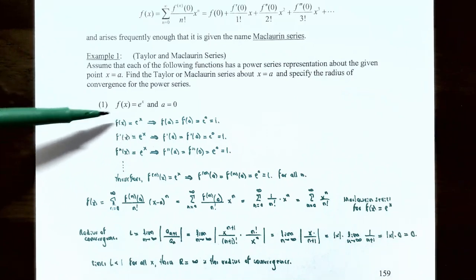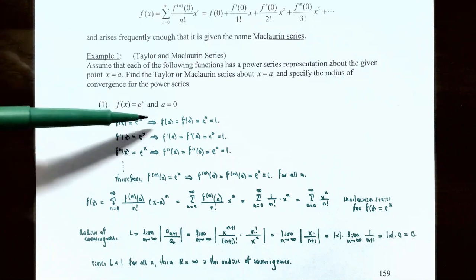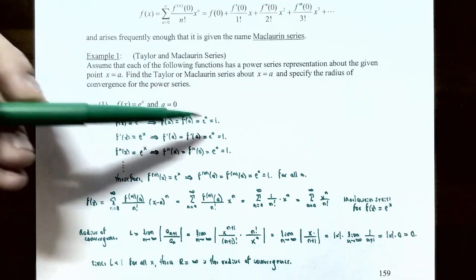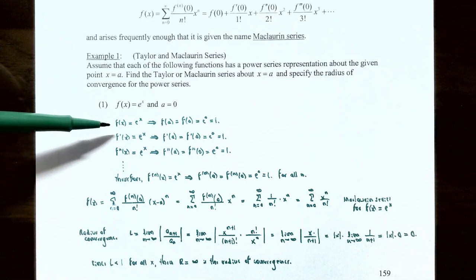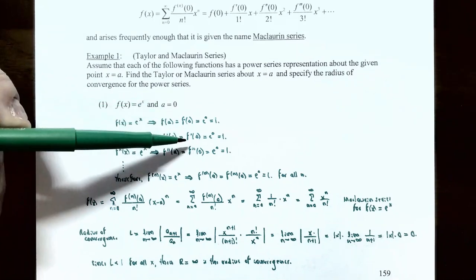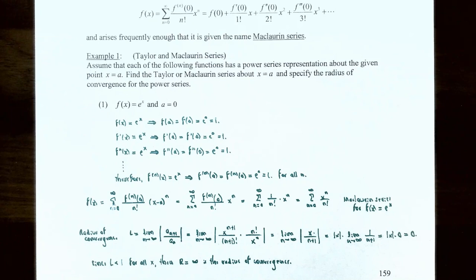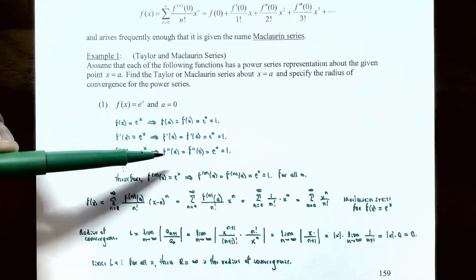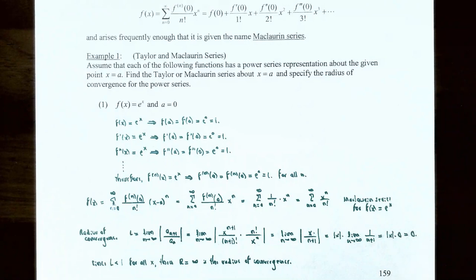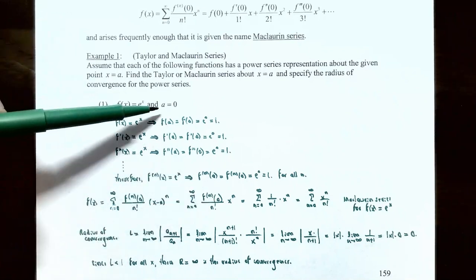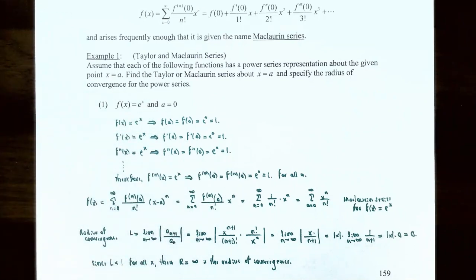We need the pattern for the coefficients c_n, which involve derivatives evaluated at a=0. The original function f(x) = e^x evaluated at 0 gives f(0) = e^0 = 1. The first derivative is e^x; evaluated at 0, f'(0) = 1. The second derivative is also e^x; f''(0) = 1. So all derivatives of e^x are e^x, and evaluating at a=0 gives 1 for all values of n.